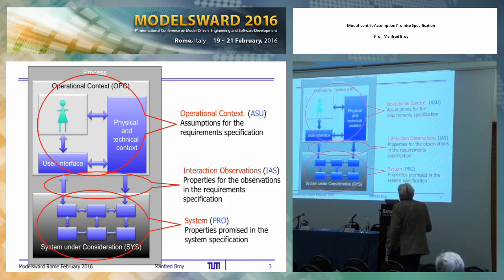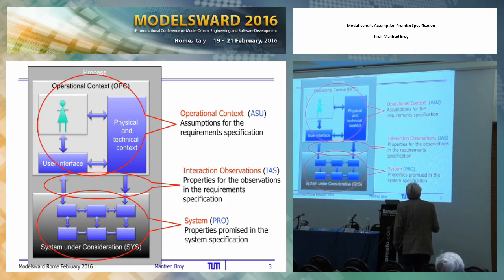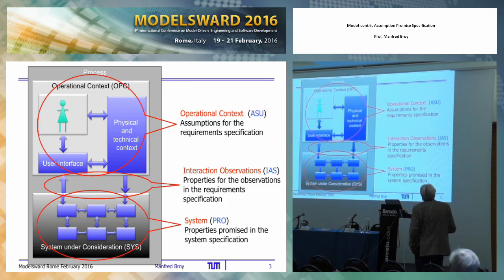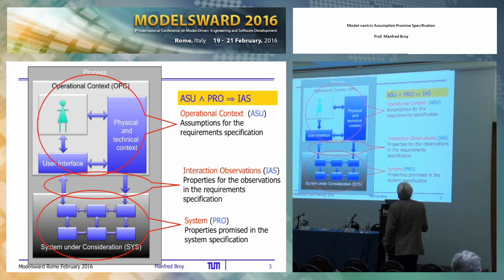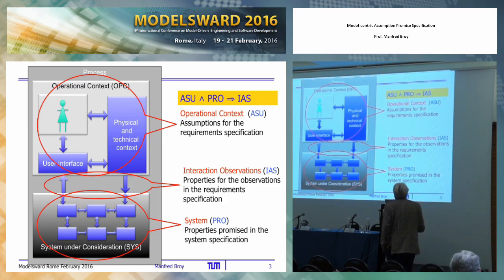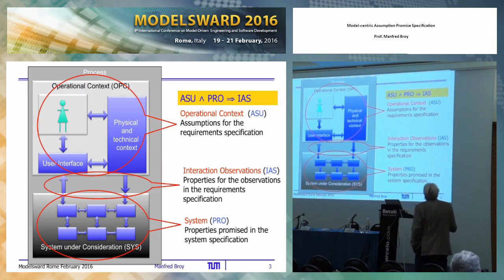Of course, we are also interested in characterizing the operational context. We have the operational context, which is characterized by its properties. We have the system, which is characterized by properties. I use ASU here, which stands for assumptions, and PROB stands for promises. Having done that, we could also ask how this interaction between the system and the context is determined. Then we get a very simple logical relationship, because from the properties of the context and the properties of the system — from the assumptions and the promises — we can derive the properties of the interaction between the system and the context.